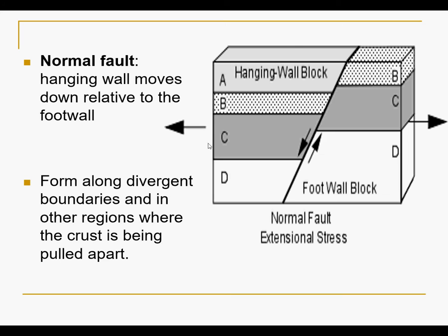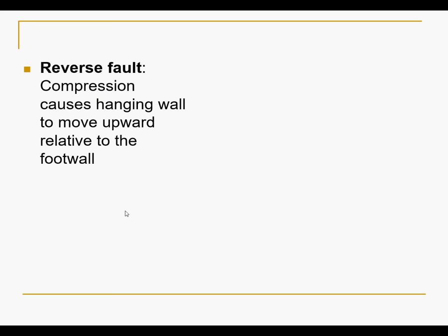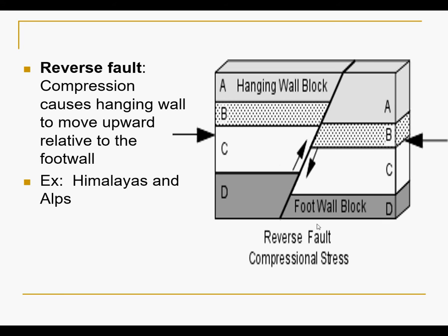A normal fault is where the hanging wall moves down — the hanging wall goes down and the foot wall is on the underneath of the fault. That's the foot wall. If we have a fault it's usually just dropping. A reverse fault is when the foot wall is dropping and the hanging wall is going up, or the hanging wall goes up while the foot wall stays the same — it's like ramming one piece of pizza over the top of another.